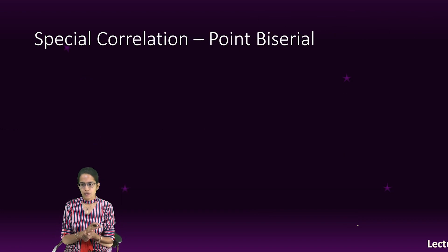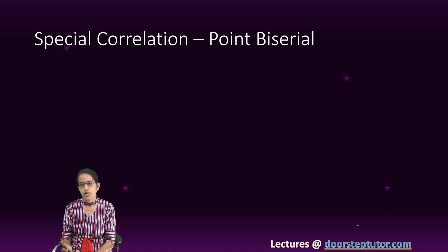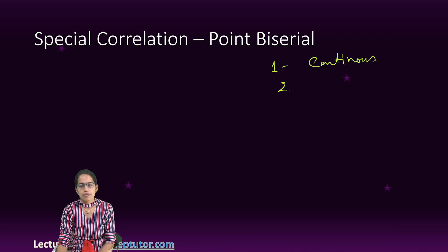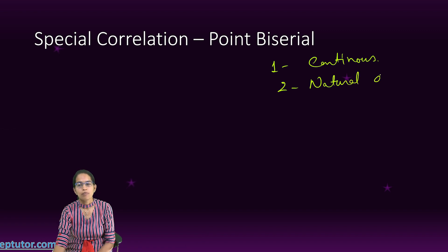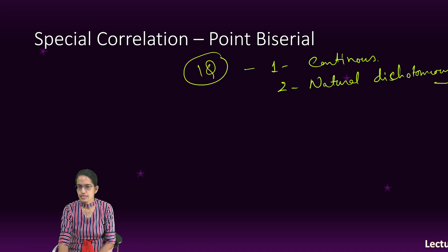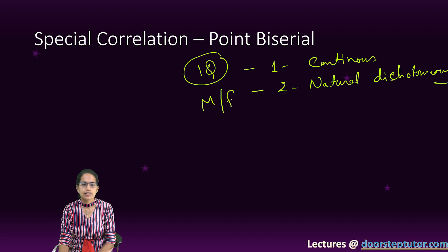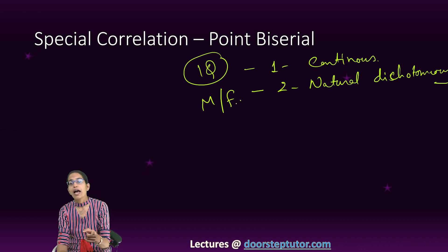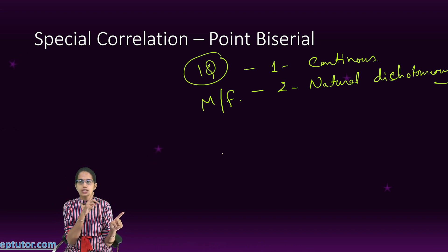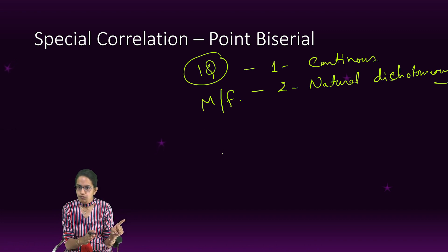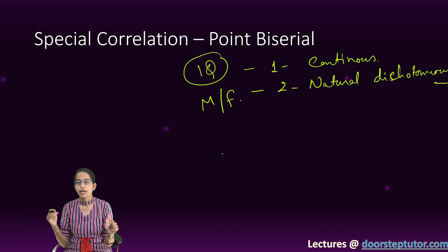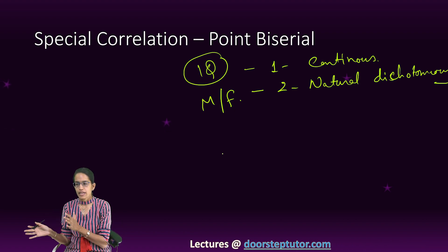Point biserial correlation is a special form of correlation where one variable is continuous and the other variable is a naturally occurring dichotomous variable. For example, I have intelligence as a continuous variable, and I understand intelligence for males and females — this is where we apply point biserial. To summarize: biserial is applied where one variable is continuous and the other is artificially dichotomous; in the case of point biserial, one variable is continuous and the other is a naturally dichotomous variable, such as male and female.